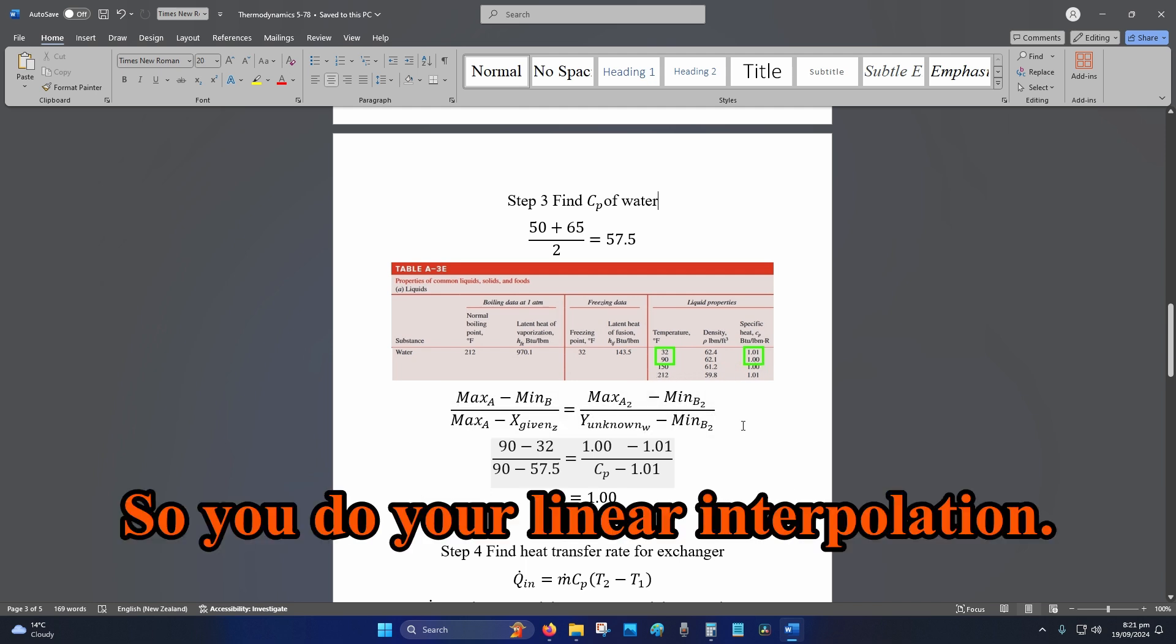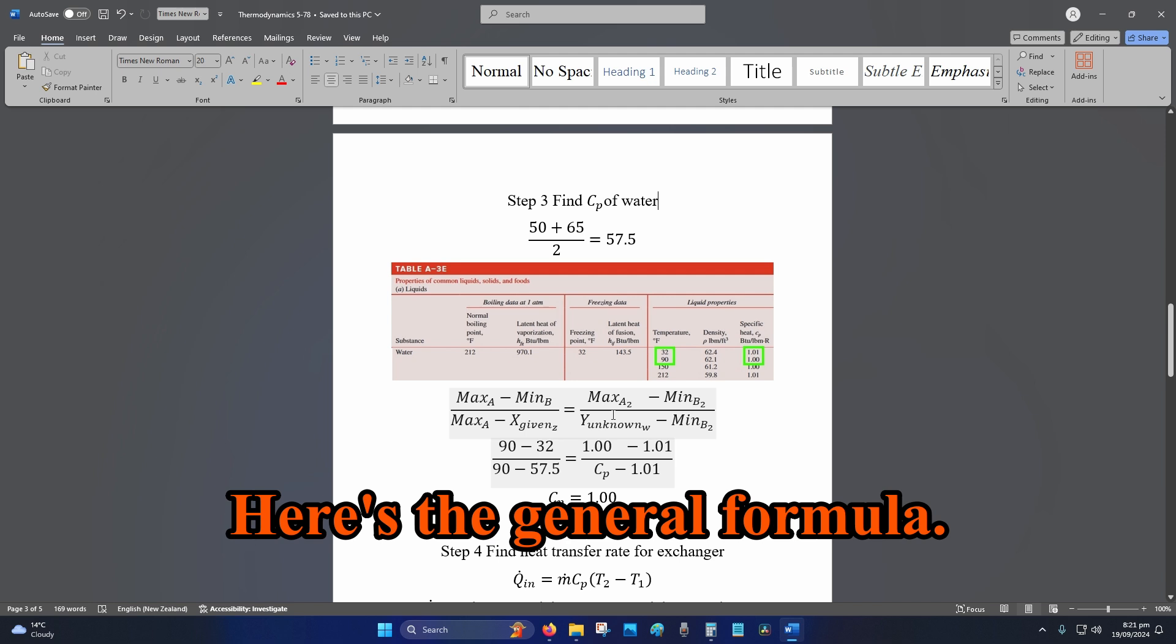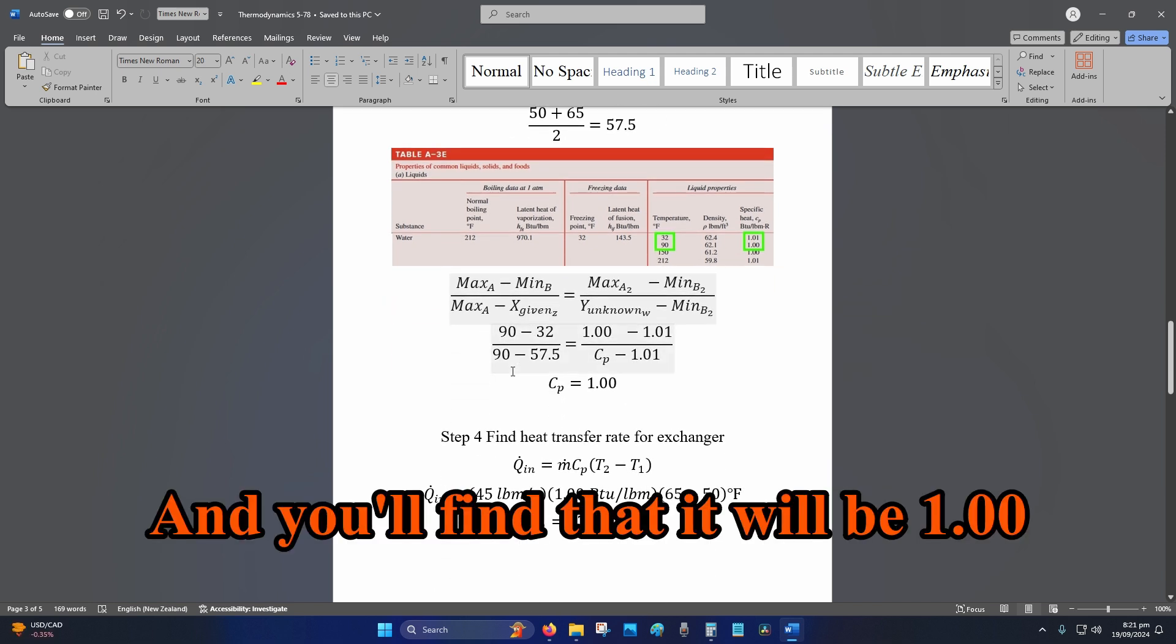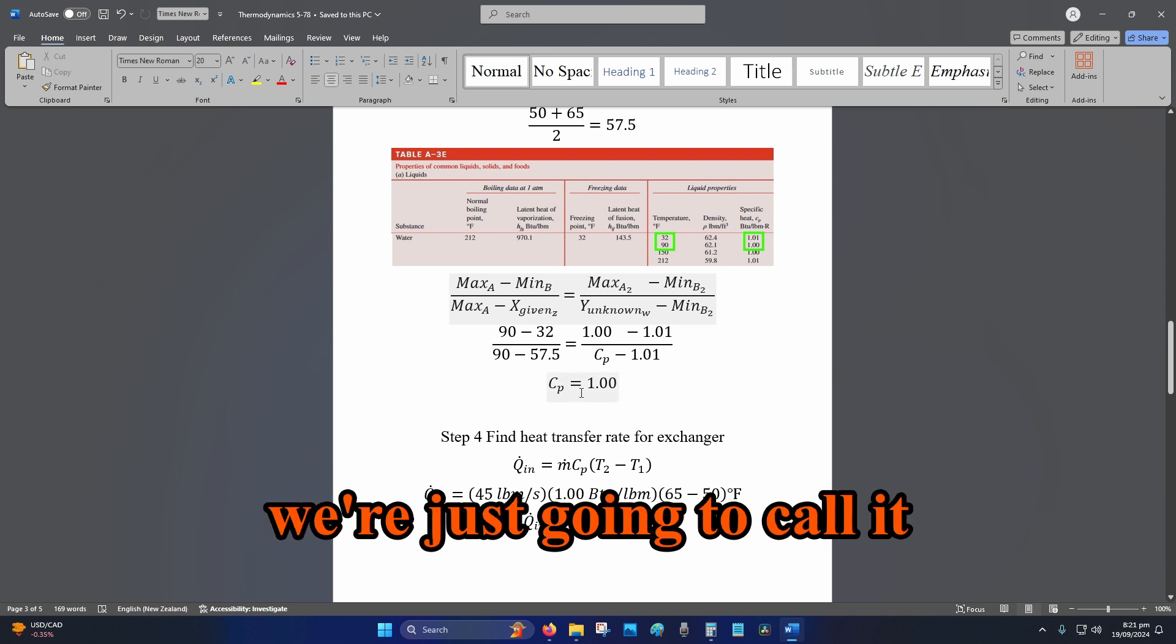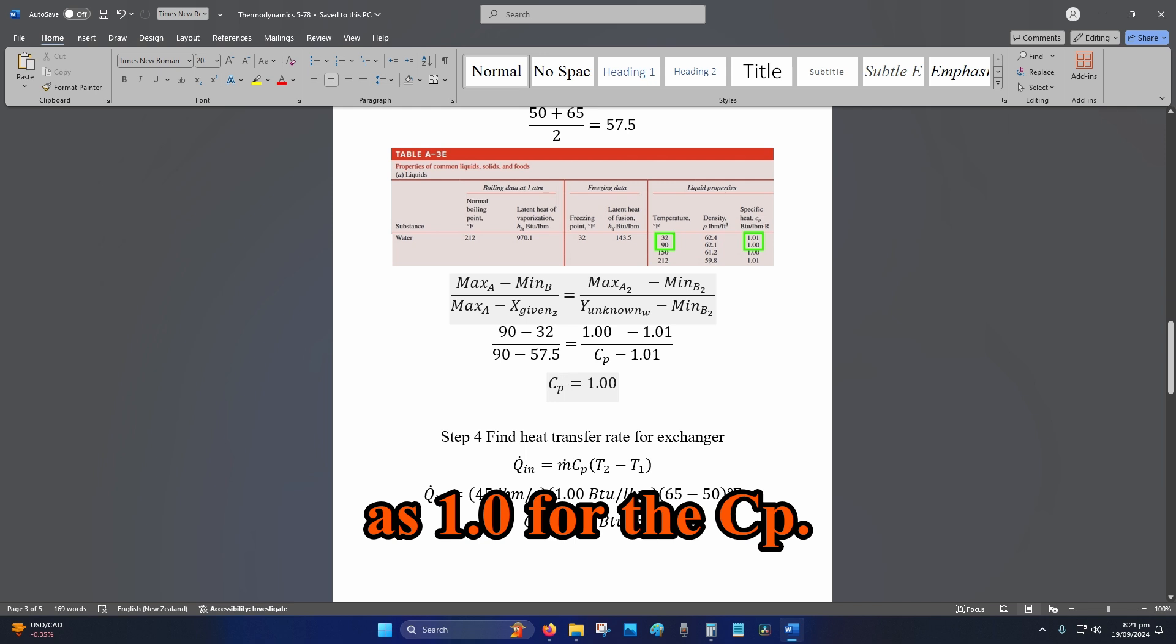So you do your linear interpolation. Here's the general formula. And you'll find that it'll be 1.00 something rounded down so we're just going to call it as 1.0 for the Cp.